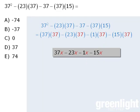To simplify the expression involving the xs, we will begin with 37x and subtract 23x to get 14x. From here when we subtract 1x we get 13x.